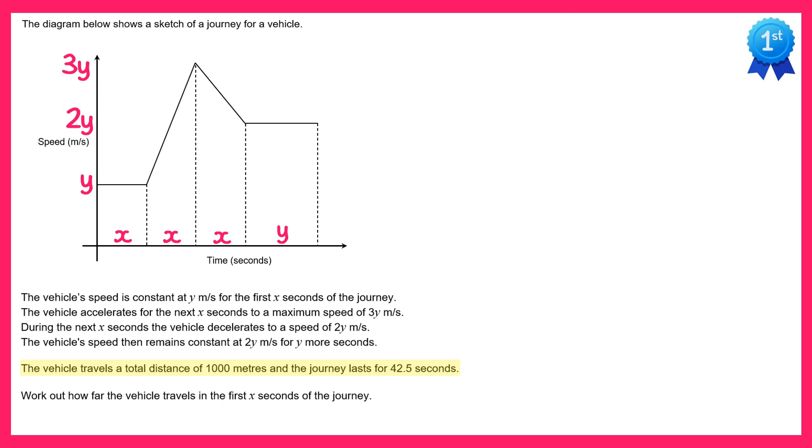To work out the total distance on a speed time graph we need to work out the area under the graph. So we'll do this in sections. The first one here, the area of that is just x times y, so xy.